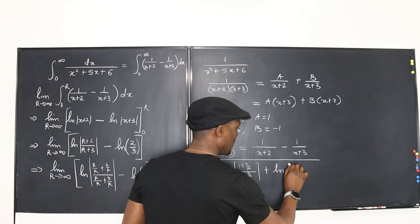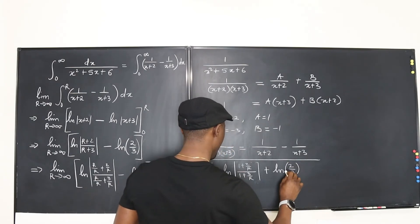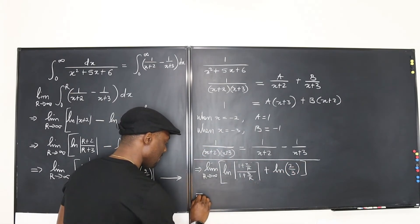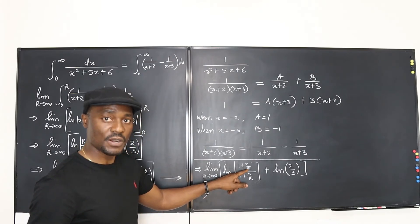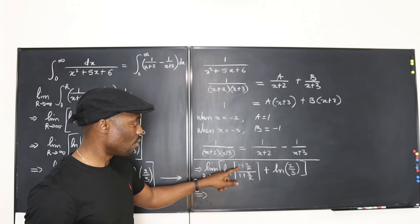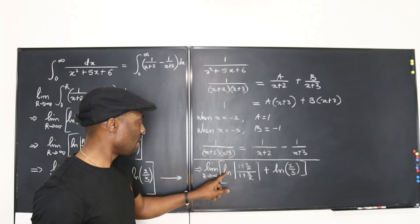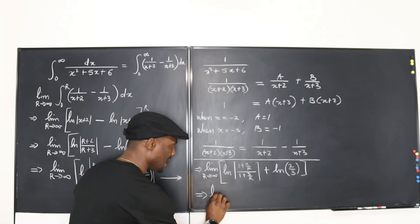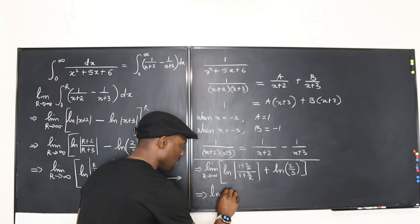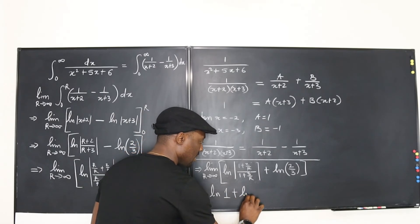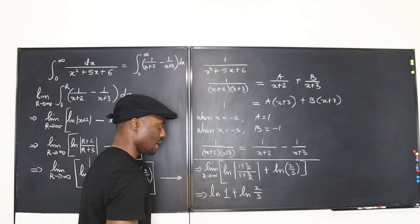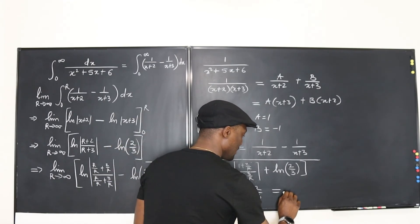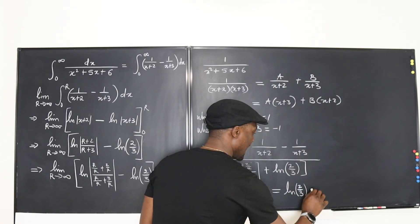So after applying the limit we get the natural log of 1 over 1, which is the natural log of 1, plus the natural log of 2/3. The natural log of 1 is 0, so it's 0 plus the natural log of 2/3, which equals the natural log of 2/3. That is our final answer.